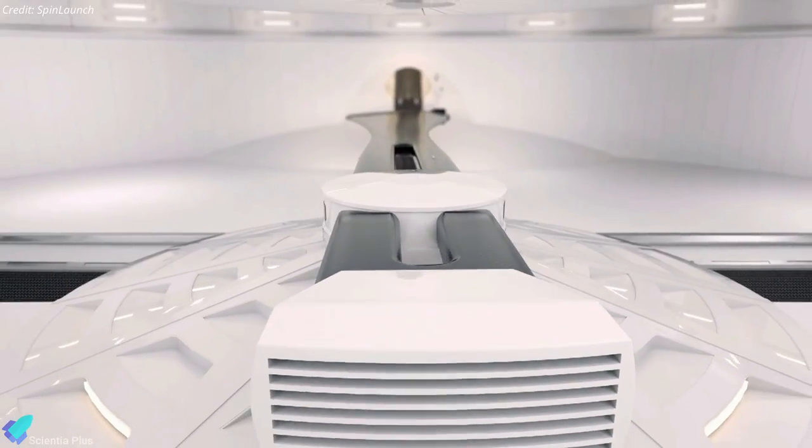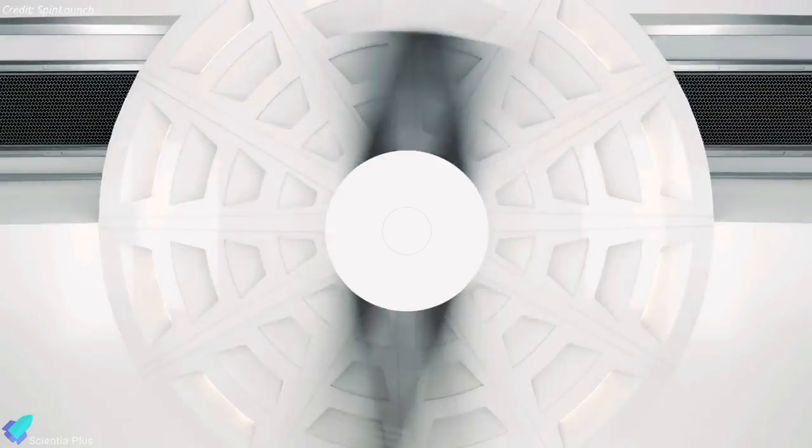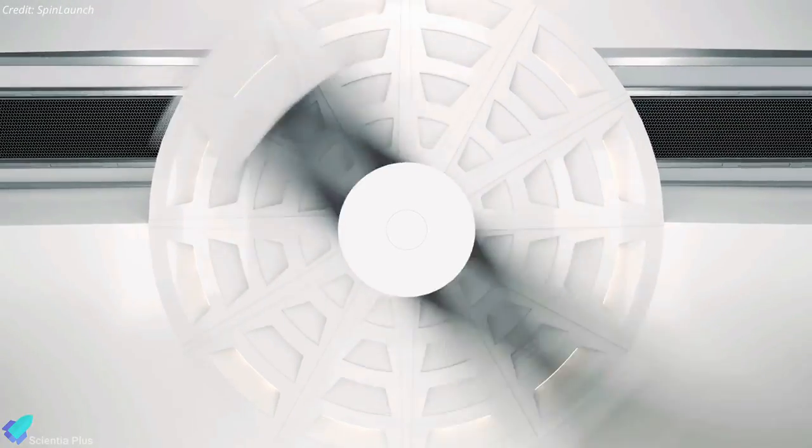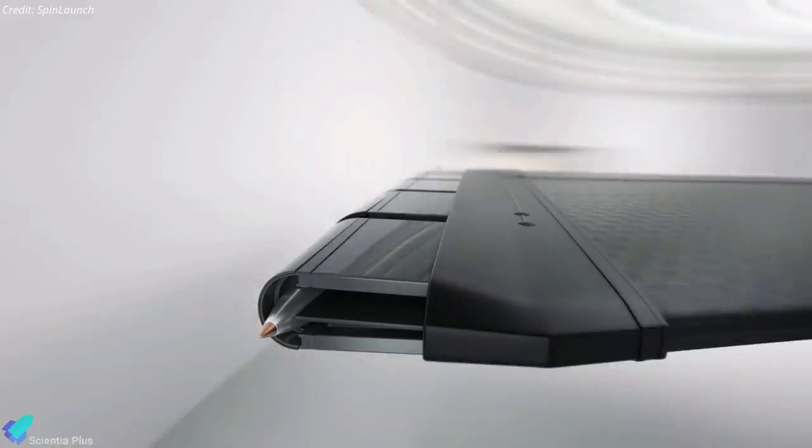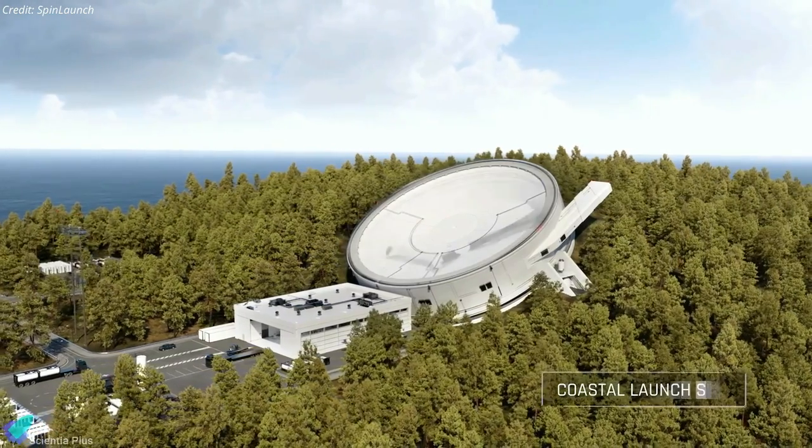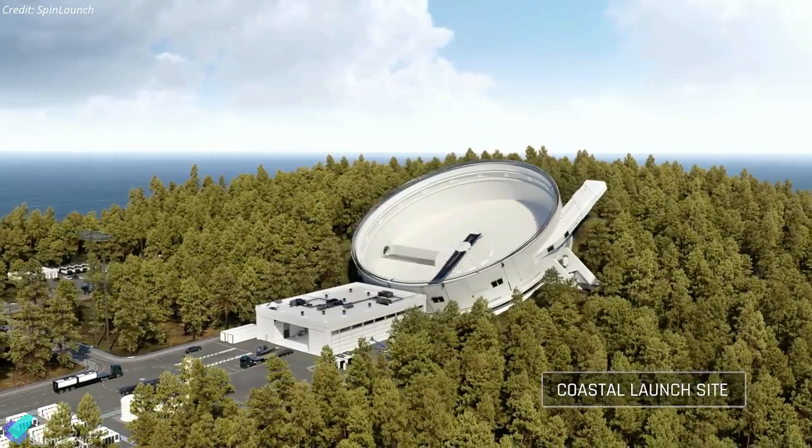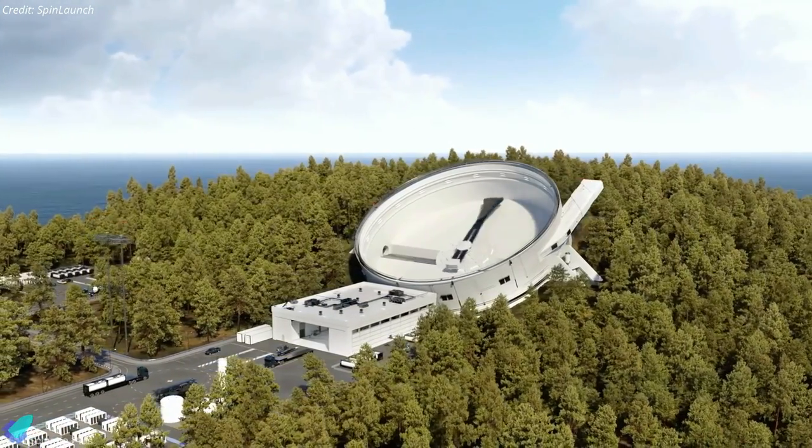The key to Spin Launch's vision of the future is the orbital accelerator, a massive centrifuge that can accelerate a small vehicle to thousands of kilometers per hour. The company reaches these incredible speeds by running the centrifuge inside a 91 meters diameter vacuum chamber to reduce drag.